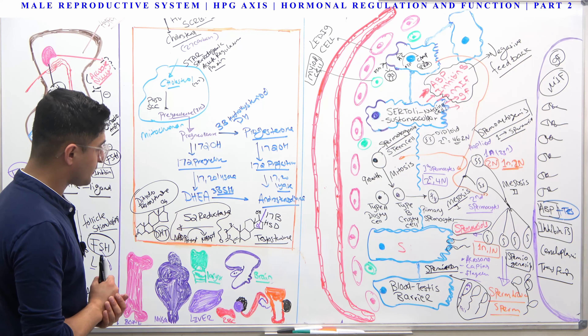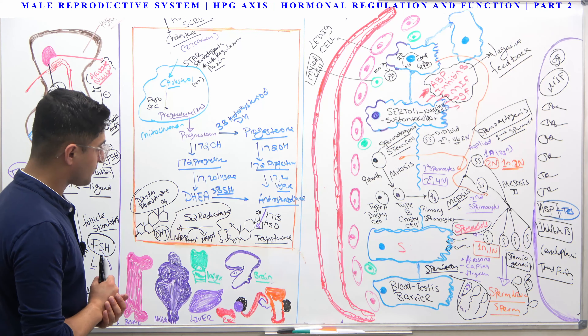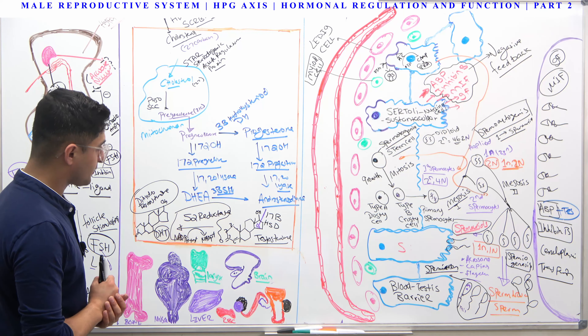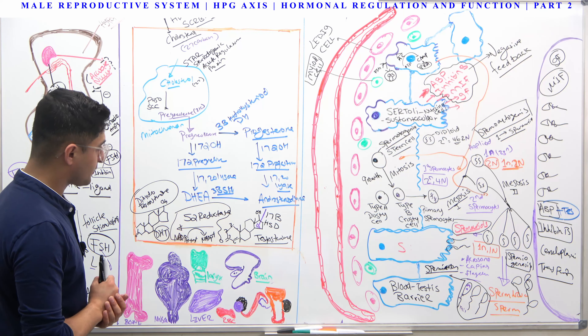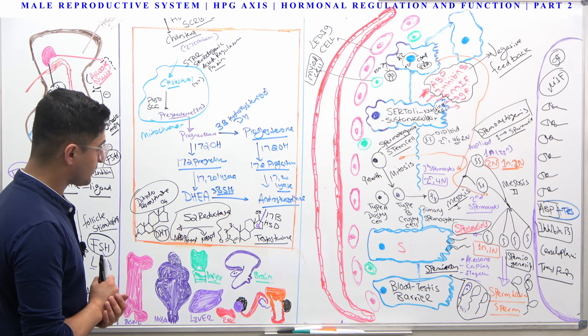Testosterone can also bind sex hormone-binding globulin (SHBG), and about 44% binds to it. The rest is free testosterone. It is very important that a high level of SHBG can decrease the free level of testosterone, and it's the free testosterone that is the biologically active form.